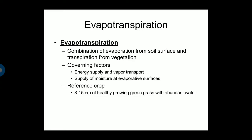The reference crop is 8 to 15 cm of healthy growing green grass with abundant water. The combo method works if it is contributed to local conditions.